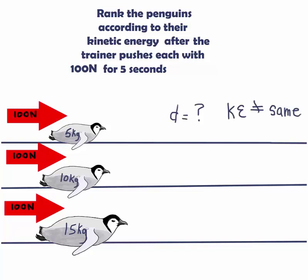In the first question, the penguins had the same kinetic energy because the same amount of work was done on them according to force times distance. Now we don't know anything about the distance pushed. So we know that their kinetic energy will be different.